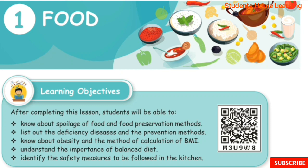Unit 1: Food. Learning objectives — after completing this lesson, students will be able to know about spoilage of food and food preservation methods. List out the deficiency diseases and prevention methods. Know about obesity and the method of calculating BMI.